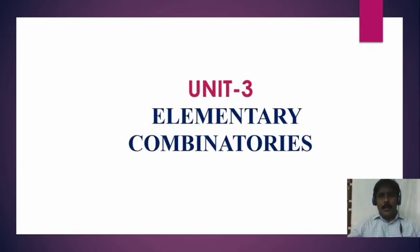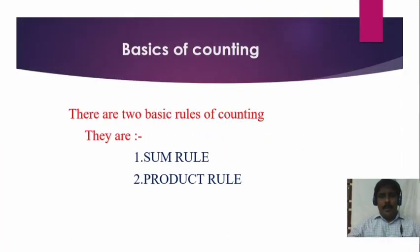Hi students, from today I am going to start Unit 3, that is Elementary Combinatorics. The first topic in this unit is basics of counting. There are two basic rules of counting: number one is the sum rule and number two is the product rule. Now we define what the sum rule and product rule are.